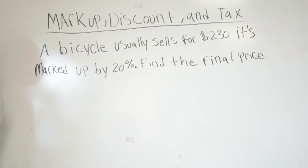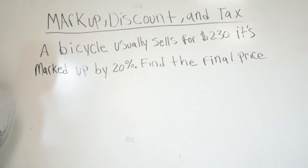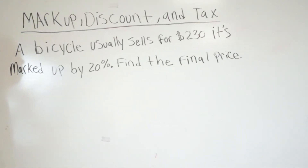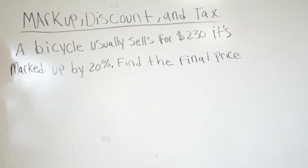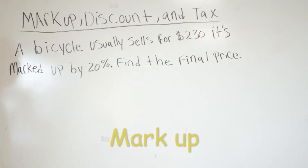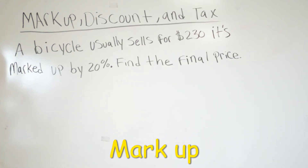Tax is when you go buy something and you always pay a little bit more. For example, if you go to the market to buy food, they say the total is $19.89, but when you go to pay they say it's $21.54, because you're adding the tax.